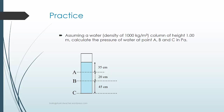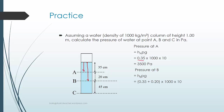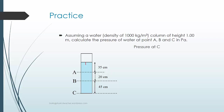Practice: a water column of height 1 meter. Calculate pressure at points A, B, and C. Pressure at A: height from surface = 0.35 m, so P = 0.35 × 1000 × 10 = 3,500 Pa. Pressure at B: height = 0.35 + 0.20 = 0.55 m, so P = 5,500 Pa. Pressure at C: full column = 1 m, so P = 10,000 Pa.